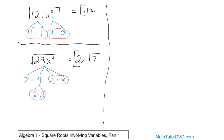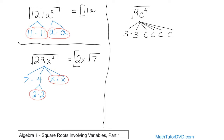Very simple once you get the hang of it. Let's do another one: √(9c⁴). We'll start our tree in the middle and branch it off. 9 is 3 times 3. Now for c to the 4th power, there are a couple of different ways you can do it. One way: c times c times c times c, because it's c to the 4th power — that's what it is.